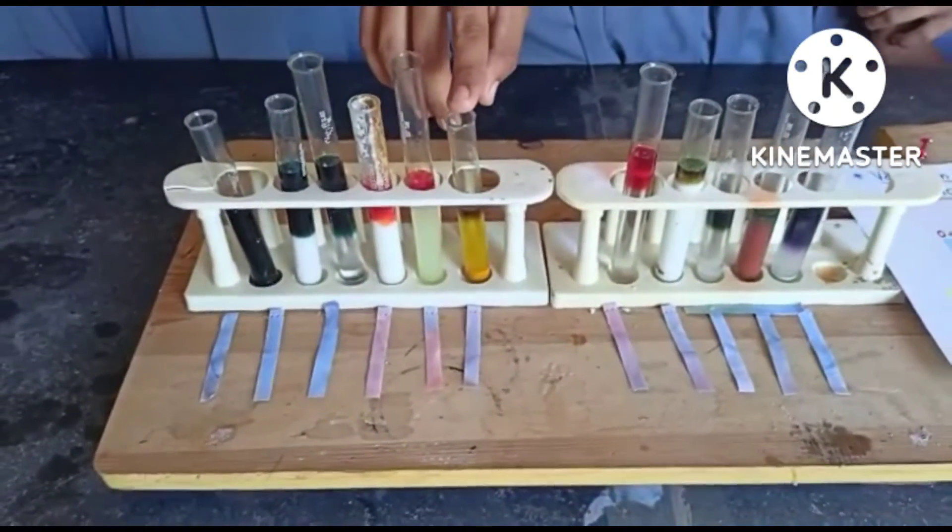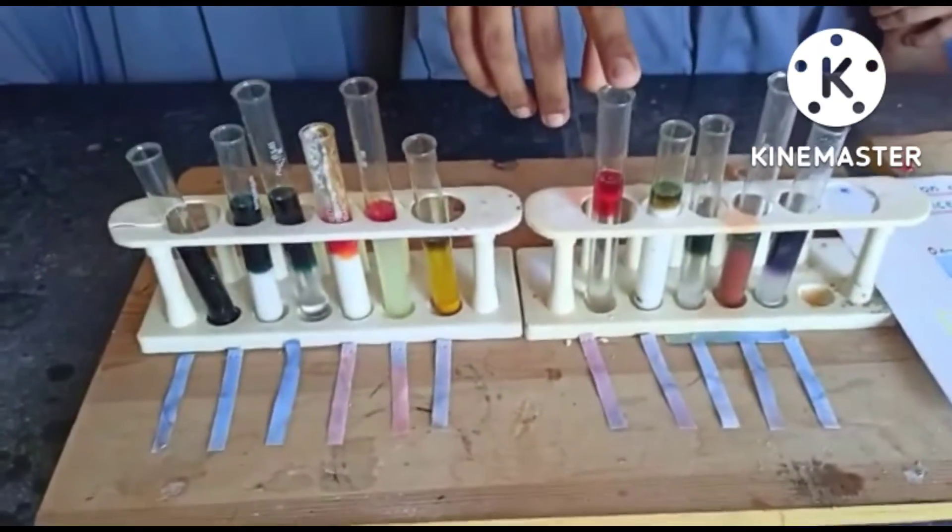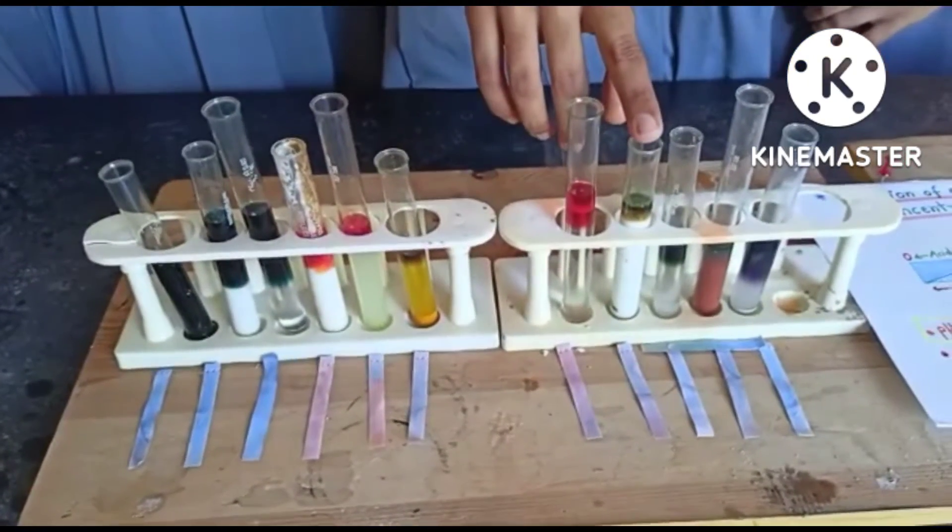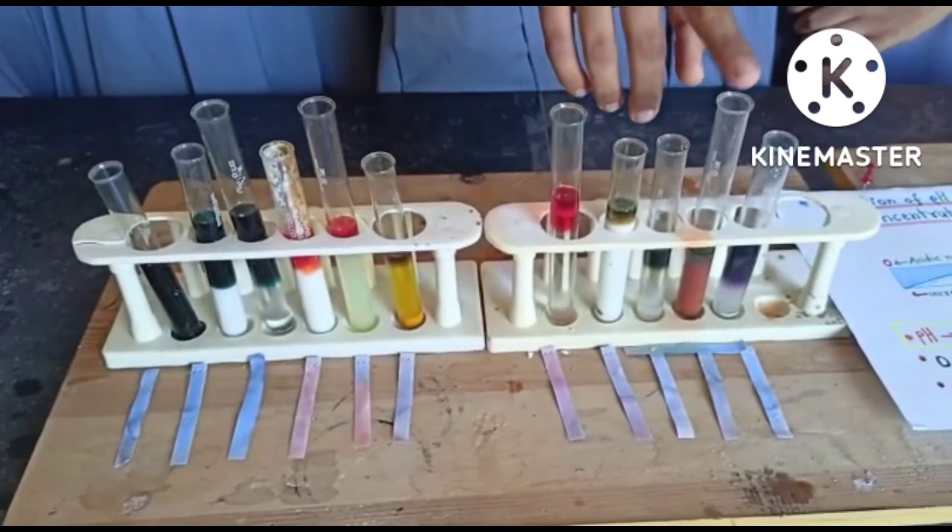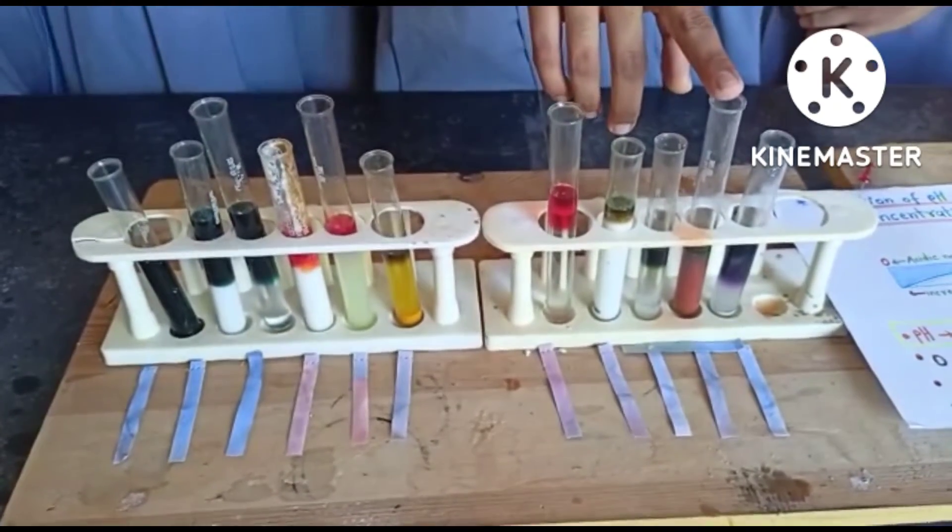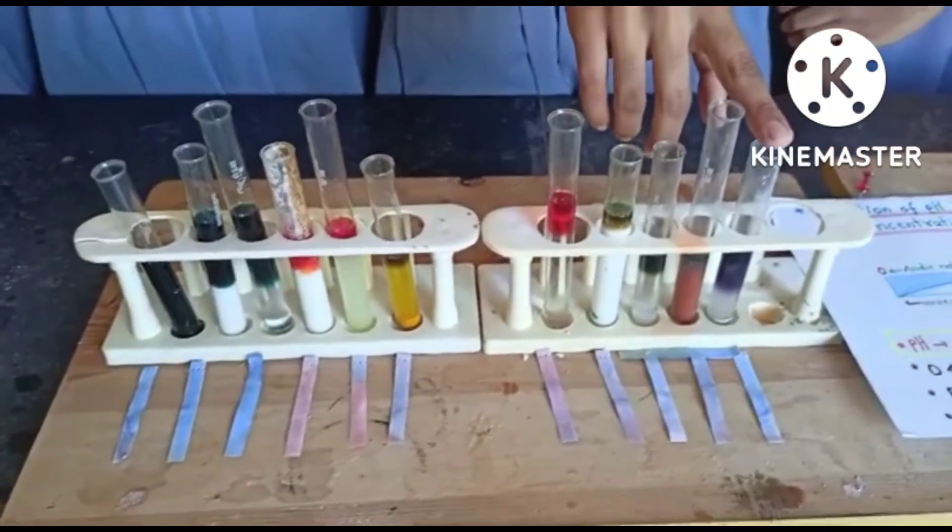The pH of turmeric is 5.9. The pH of vinegar is 2 to 3. The pH of milk is 6.7 to 6.9. The pH of salt is 7. The pH of soy is 6.5 to 7.5. And the pH of washing soda is 11.